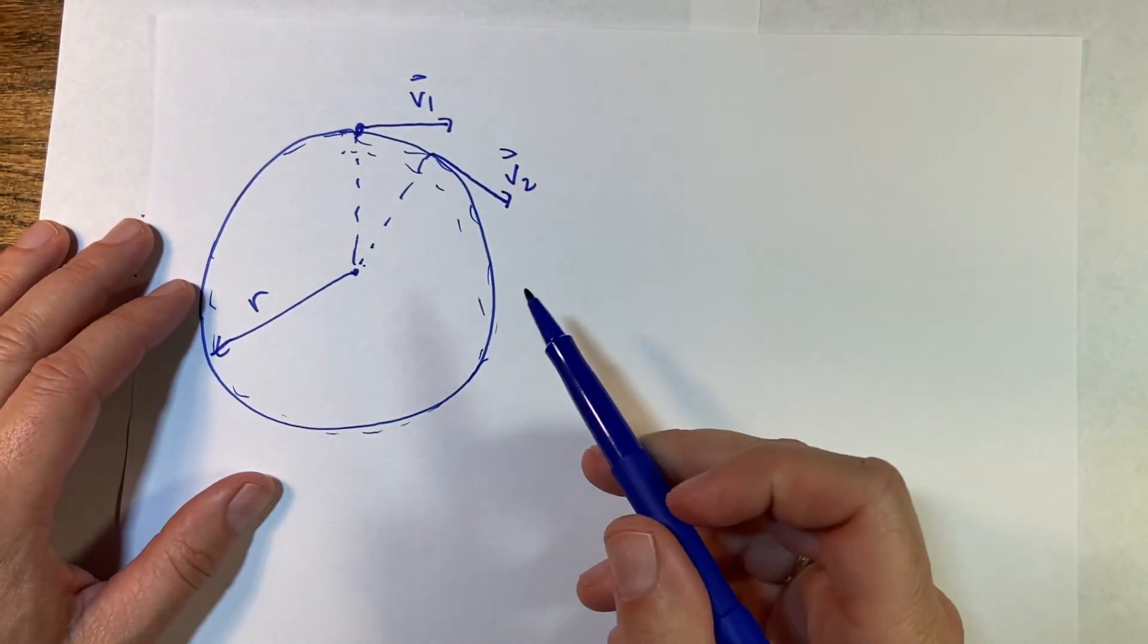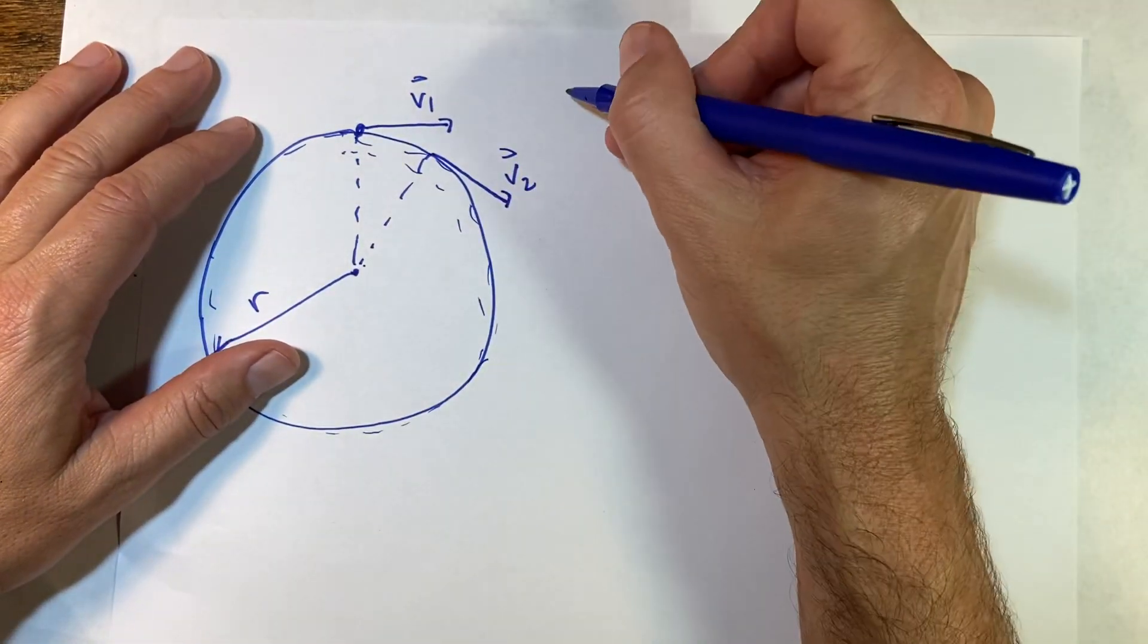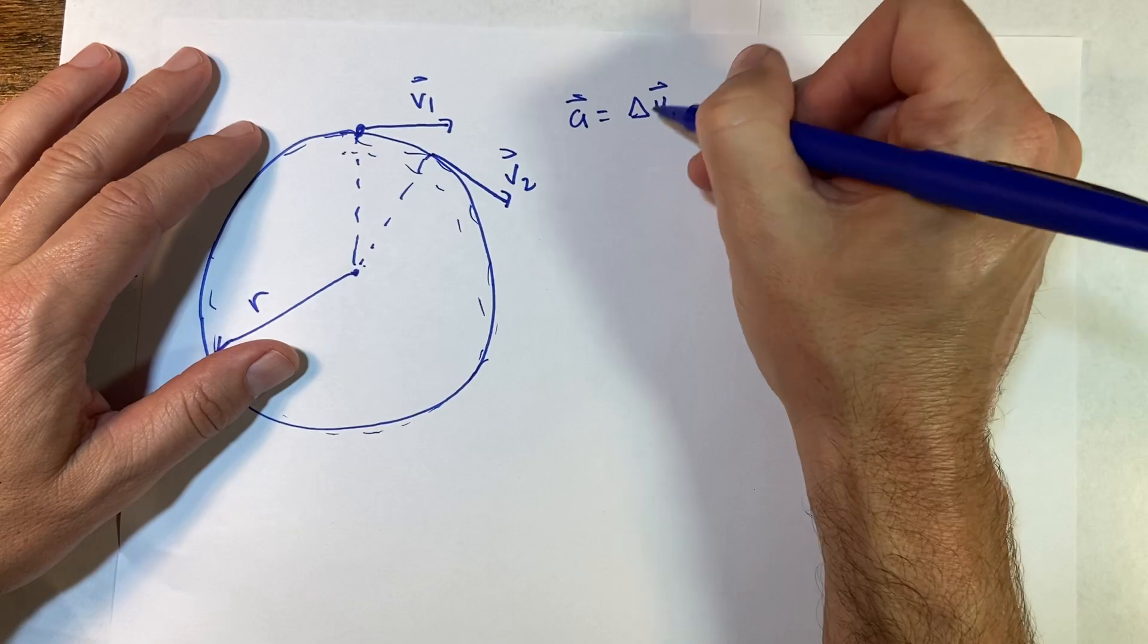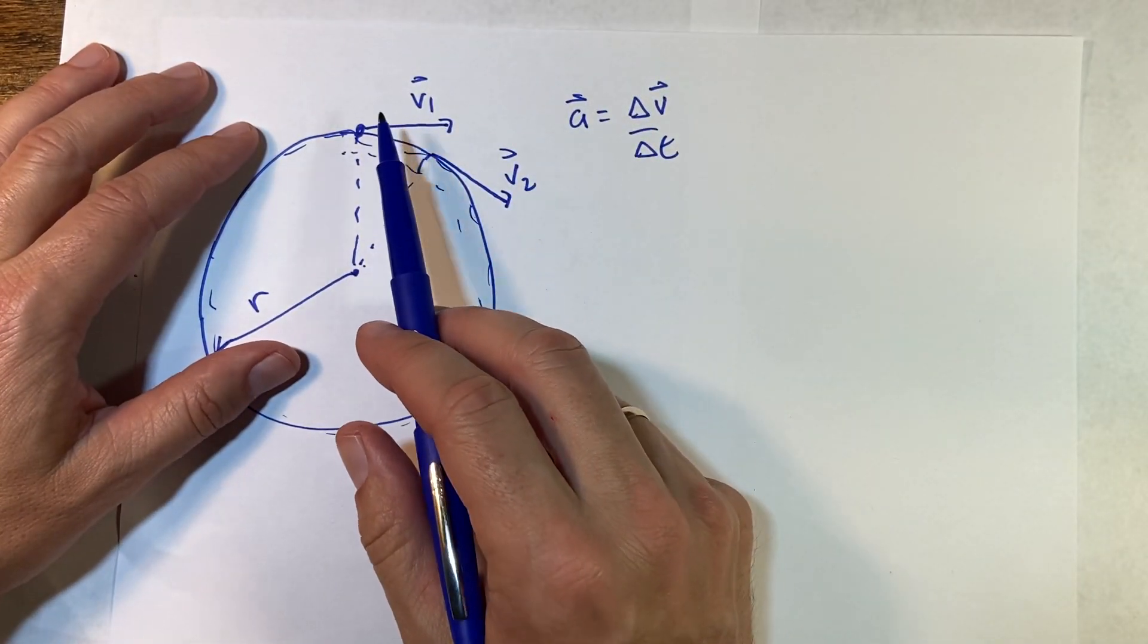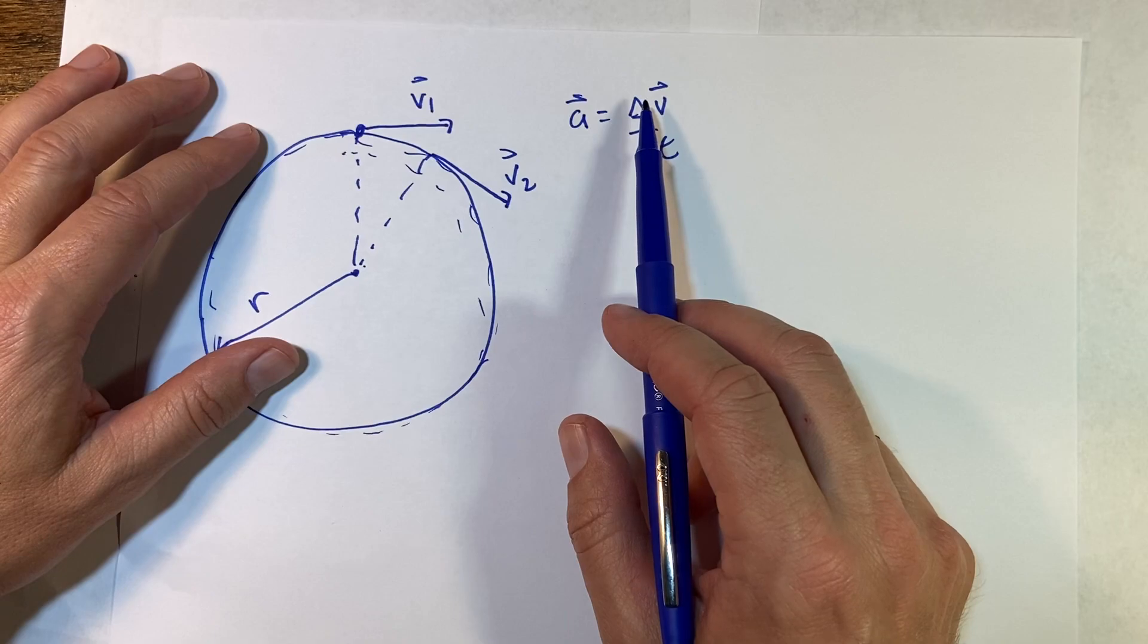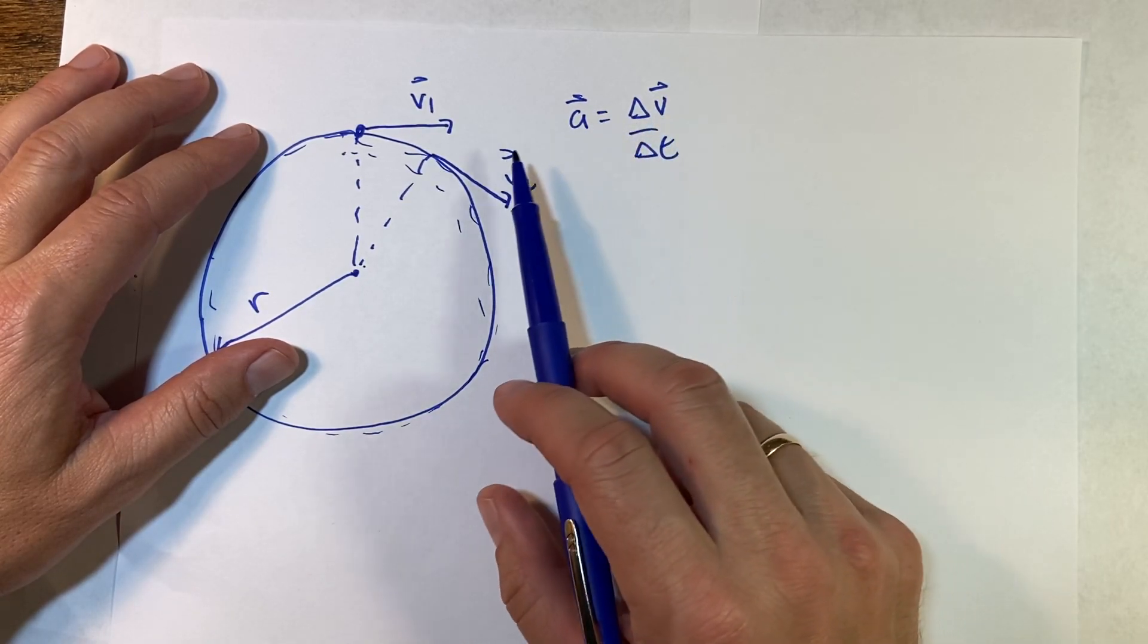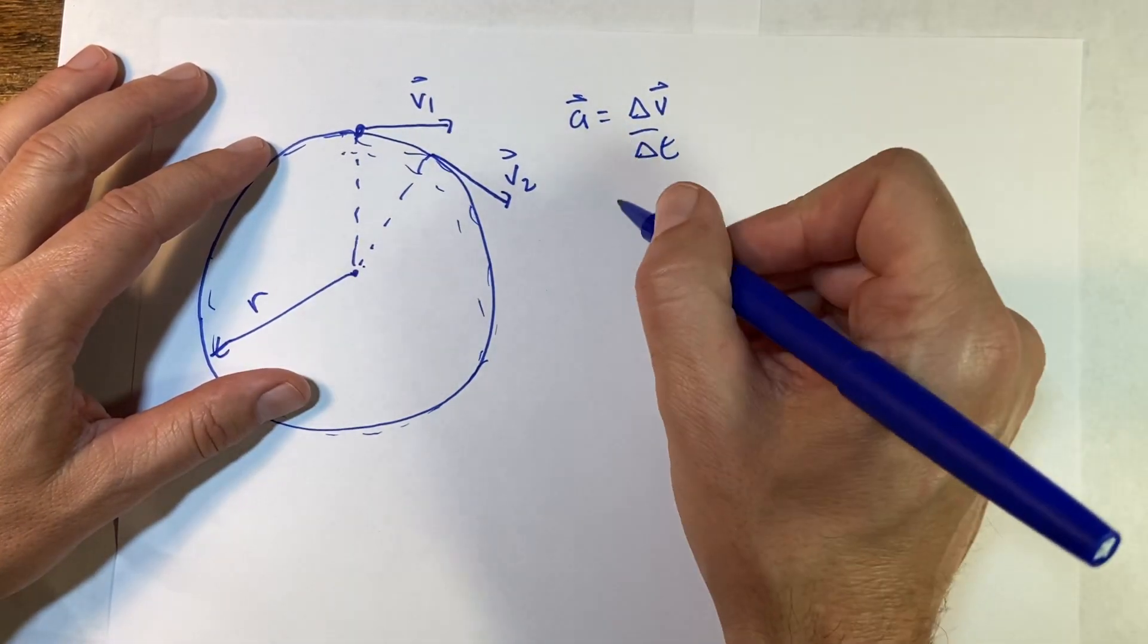So right here you can see how we know that it is indeed accelerating. Remember, the acceleration is defined as the change in velocity over the change in time. So even if it's going 10 meters per second and still 10 meters per second, you don't have to change the magnitude in order to change the velocity. So it can still accelerate.